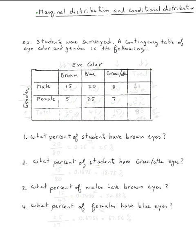The topic is marginal distribution and conditional distribution. Let's do this example. Students were surveyed, and a contingency table of eye color and gender is given. So we have two variables: eye color and gender, along with all these values. Let's answer the questions.